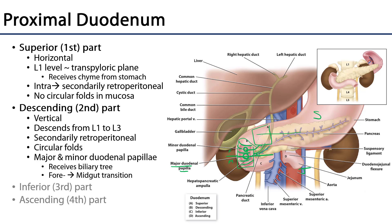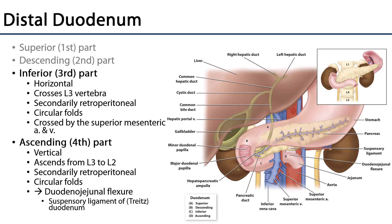At its lowest extent, the second part of the duodenum is at the L3 level and feeds into the third part, also known as the inferior part of the duodenum. It is horizontal, crossing at the L3 vertebral level, and is crossed anteriorly by the superior mesenteric vein and superior mesenteric artery. It is also secondarily retroperitoneal, has very strong circular folds, and is nestled between the superior mesenteric vasculature as well as the aorta and inferior vena cava.